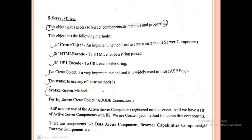The next object is the Server object. This object gives access to server components, its methods, and properties. Basically, the Server object refers to the server-side components, methods, and properties used when a request is processed on the server side.